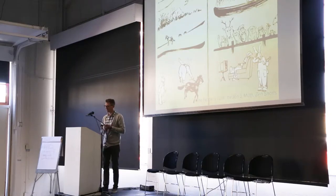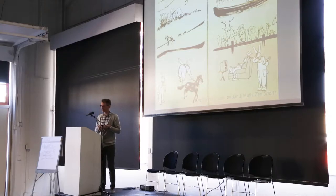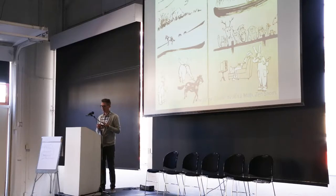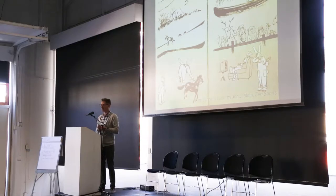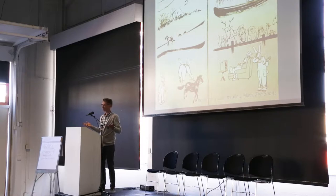One of the books my two little kids love is called Zen Shorts by John Muth. There's a story in there called The Farmer's Luck, which comes from the Taoist tradition. A farmer loses his horse, and his neighbor says, 'Oh, such bad luck.' But the next day the horse comes back with 12 additional horses. 'That's really good luck.' The farmer says, 'Maybe.' His son rides one of the wild horses, falls off and breaks his leg. 'Such bad luck.' 'Maybe.' Because the next day, the army comes looking for recruits, and his son's leg is broken so he can't join. 'Such good luck.' 'Maybe.'